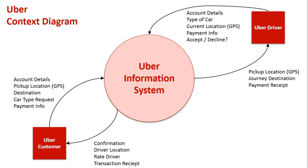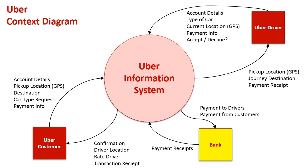Once the cost is calculated, confirmation is sent back to the customer and the driver's location is highlighted through Uber's map system, so the customer can follow the driver coming to the pickup location. The driver then takes them on the trip to their destination. After the trip, the customer rates the driver, which improves Uber's customer service. The transaction is finalized through the bank — the driver gets paid, receipts are sent both ways: the customer receives a payment receipt and the Uber driver receives a payment confirmation.